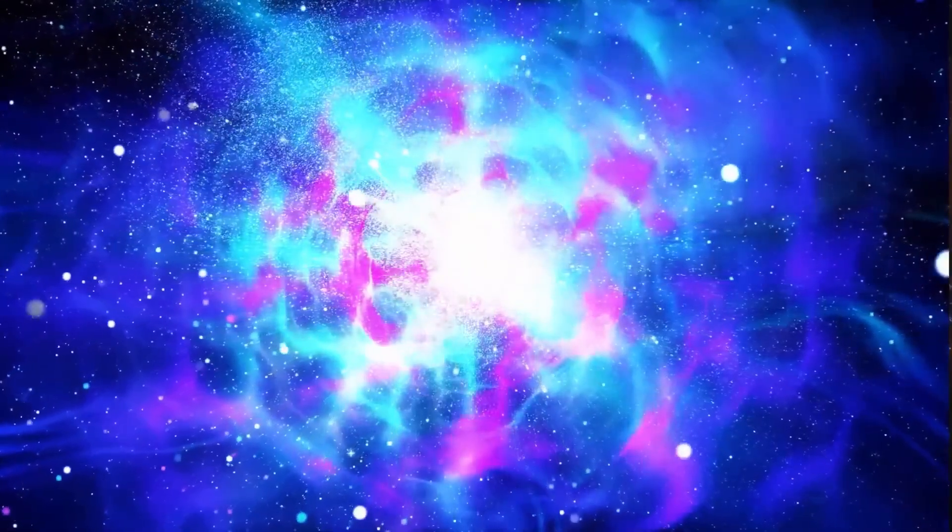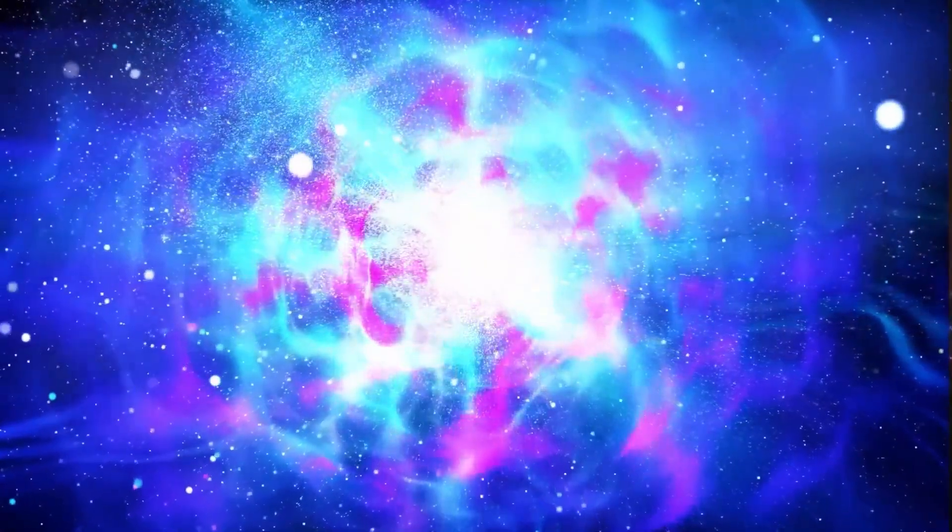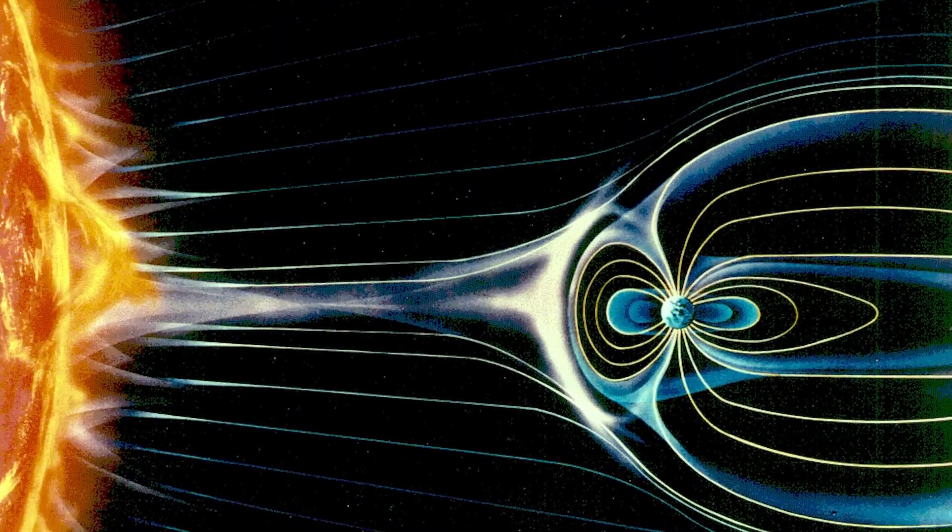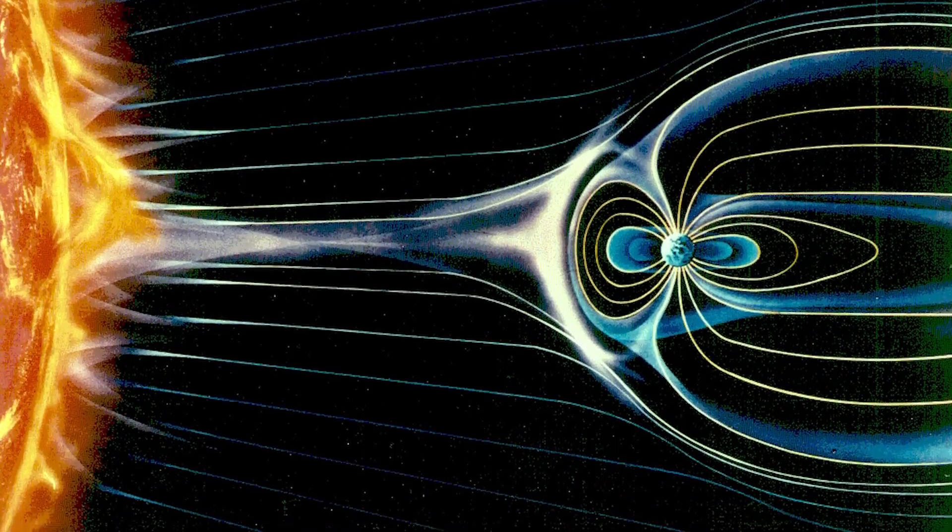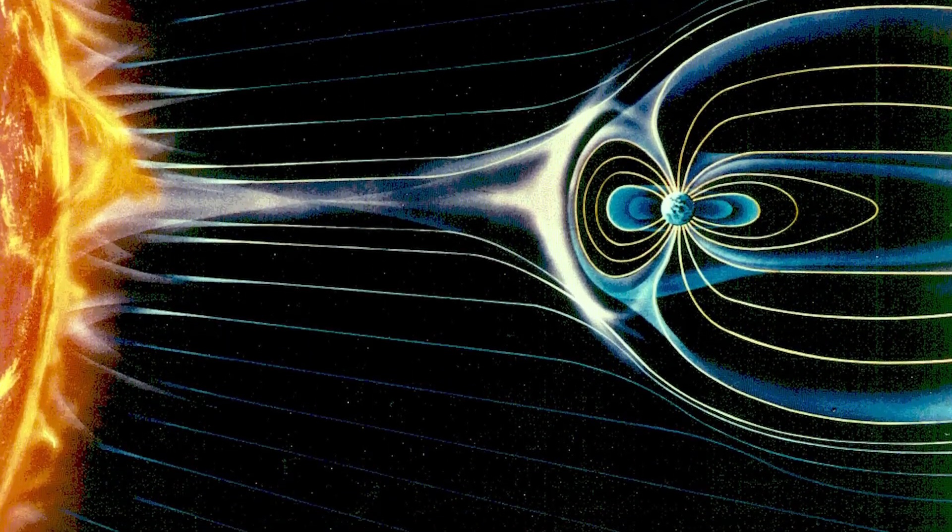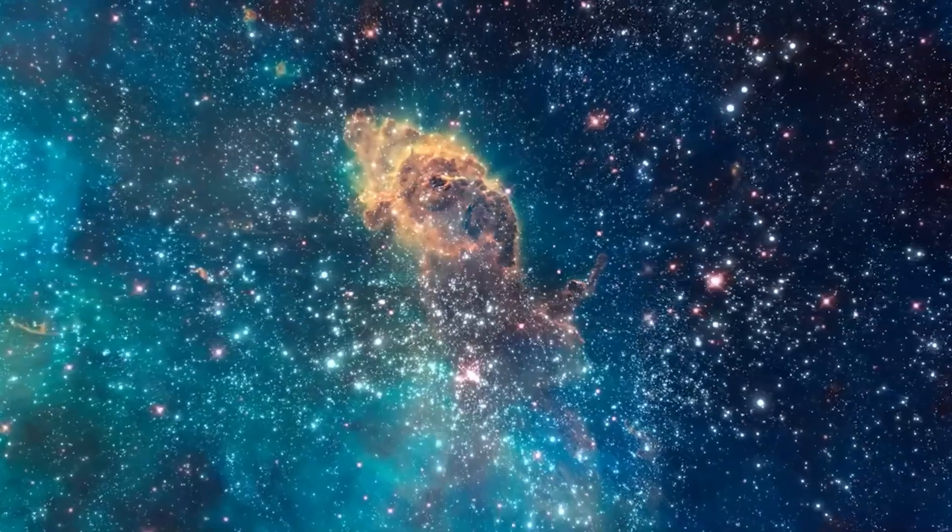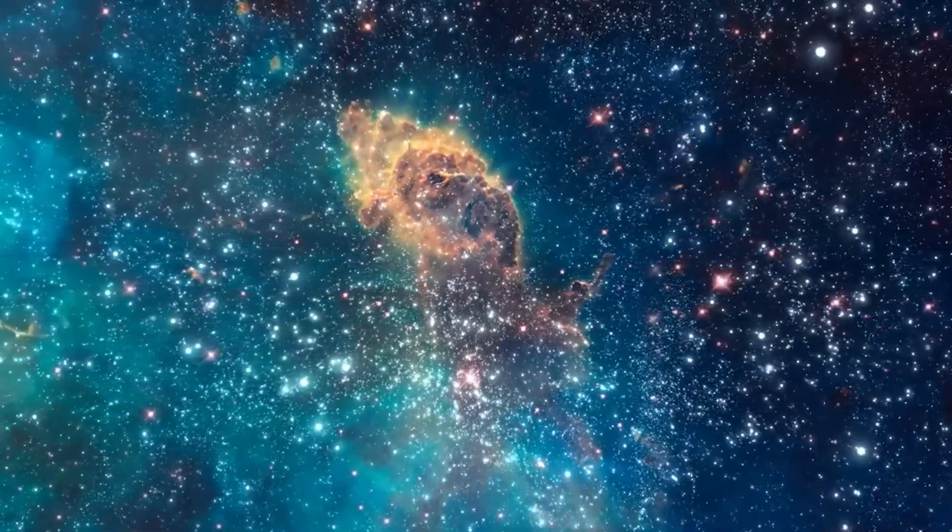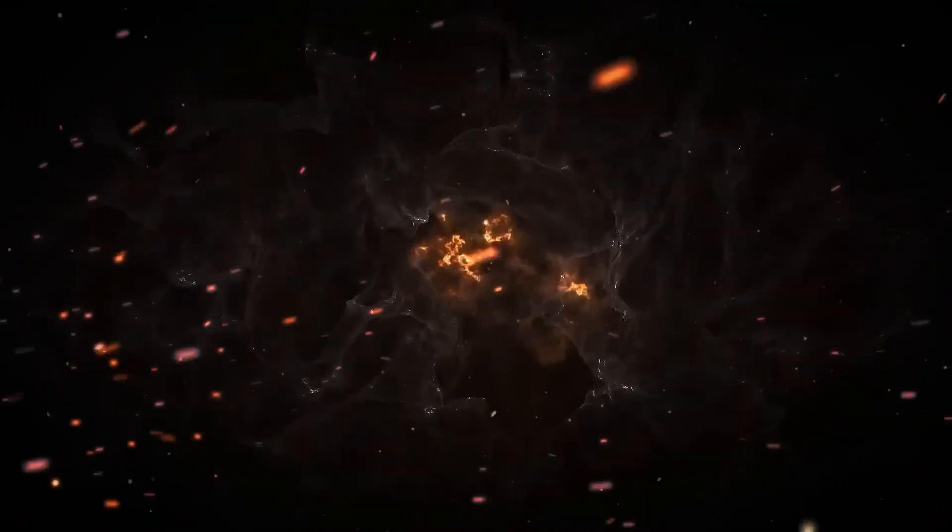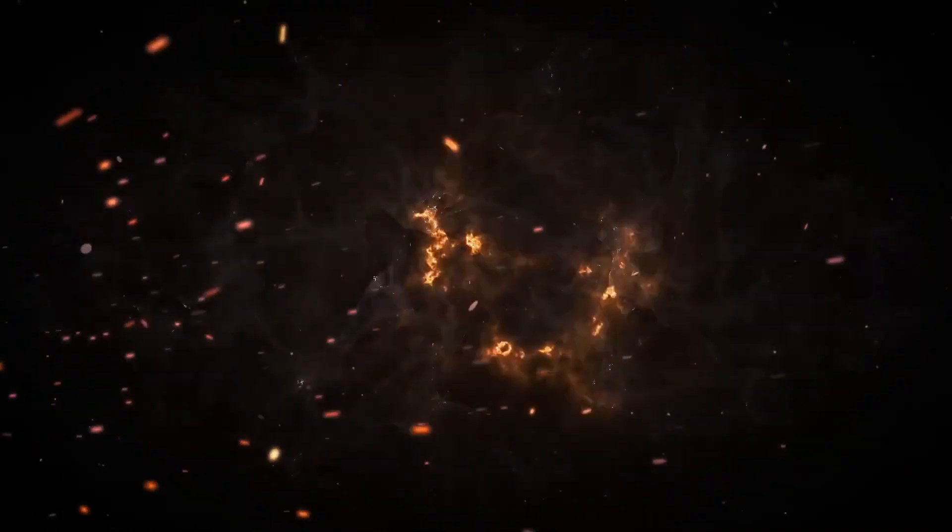The implications were enormous. If the edge of the solar system can host such events, then it might not be as passive and inert as once thought. In fact, the solar system's boundary could be a place of fierce electromagnetic activity, driven not only by the sun, but also by interactions with the galactic environment.